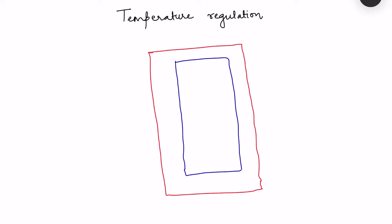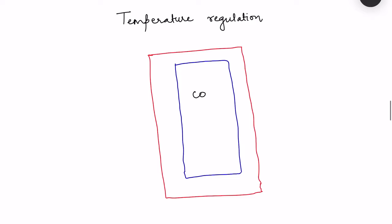Regulation of body temperature is a very important process because the various chemical reactions and enzymatic activities happening within a cell depend on the temperature. When we talk about temperature regulation, we are basically talking about core body temperature, which is kept in a very narrow range in a constant manner.